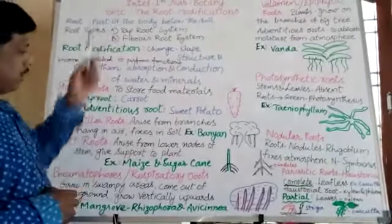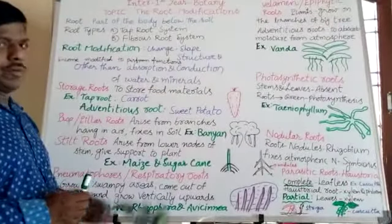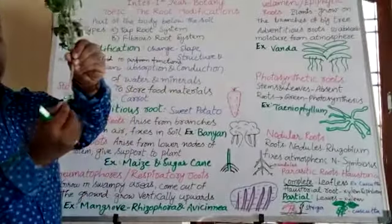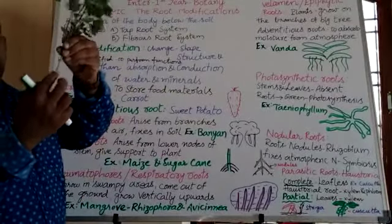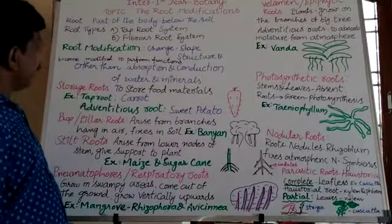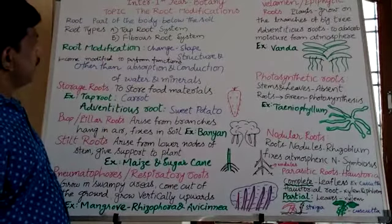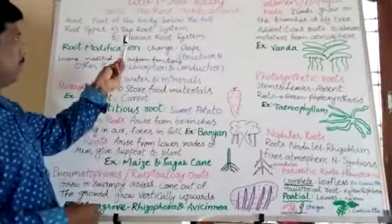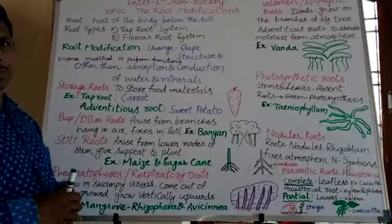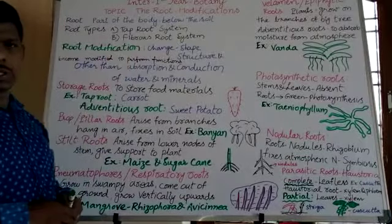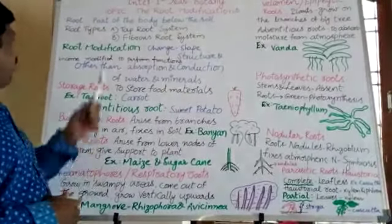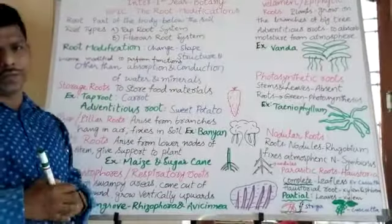How many types of roots are there? Number one is tap root system — here we can clearly see the tap root system. Number two is fibrous root system. So two types of root systems are present: tap root system and fibrous root system.